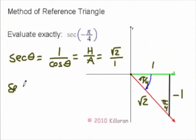So the secant of negative π over 4 is equal to positive square root of 2. And that's it.